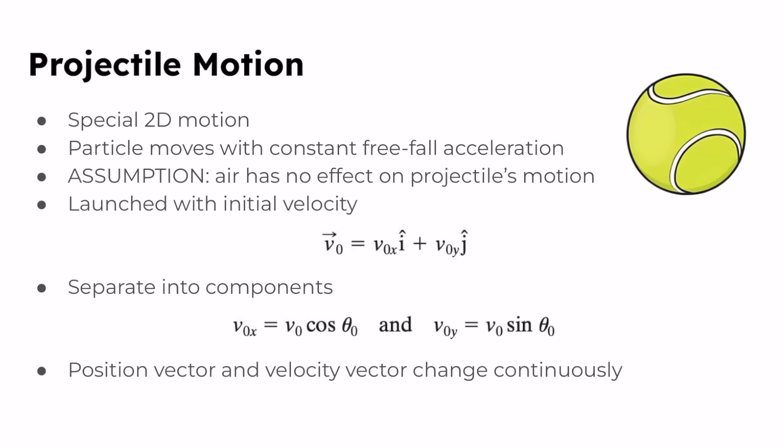This projectile could be anything like a tennis ball or a baseball in flight. For projectile motion we always use the assumption that the air has no effect on the projectile's motion. This means we don't consider any side effects that air would have, like air friction or drag, which would slow down our particle in the air.